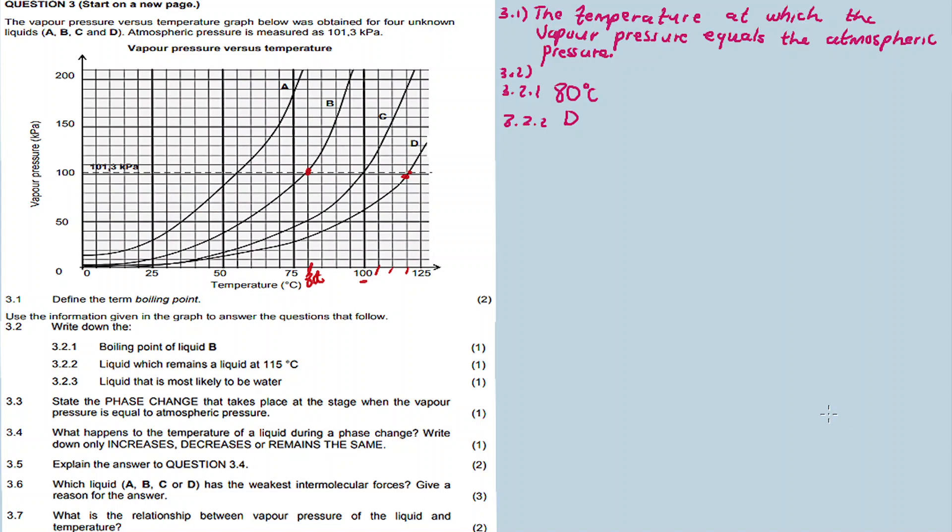Question 3.2.3: Liquid that is most likely to be water, H2O. Water has a boiling point of 100 degrees Celsius. Between liquids A, B, C, and D, liquid C has a boiling point of 100 degrees Celsius. At this temperature, the vapor pressure is equal to the atmospheric pressure, so this is water. Liquid C is water because it has a boiling point of 100 degrees Celsius.